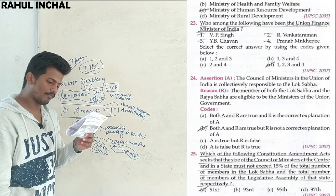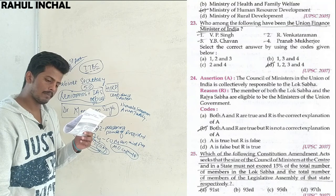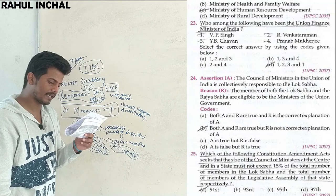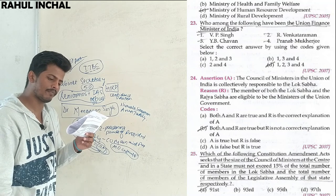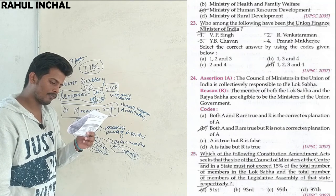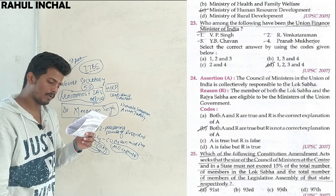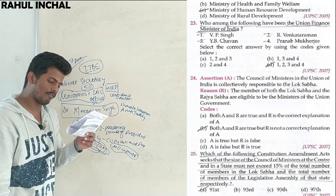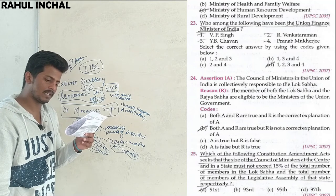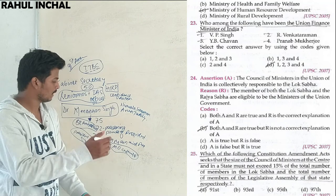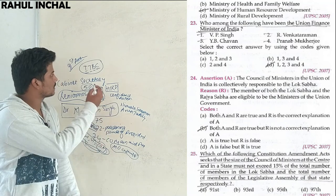Which constitutional amendment act states that the size of the Council of Ministers at the Centre and in states must not exceed 15% of the total number of members in the Lok Sabha and the Legislative Assembly of that state respectively? The answer is the 91st Amendment Act.